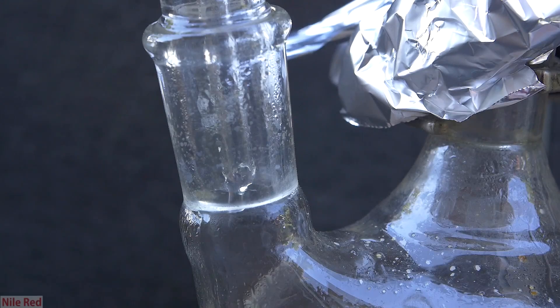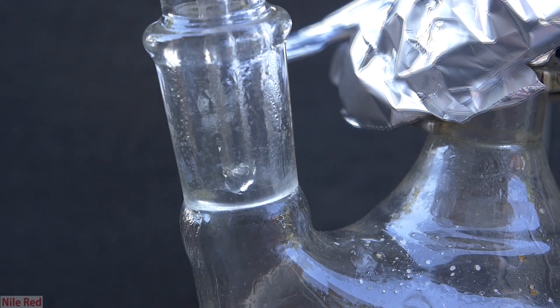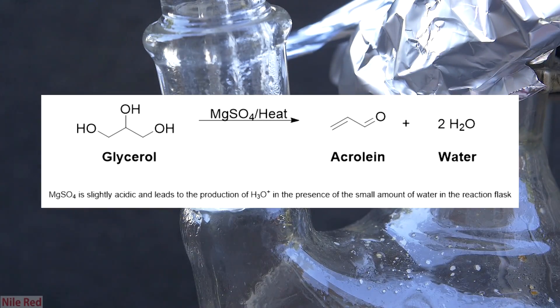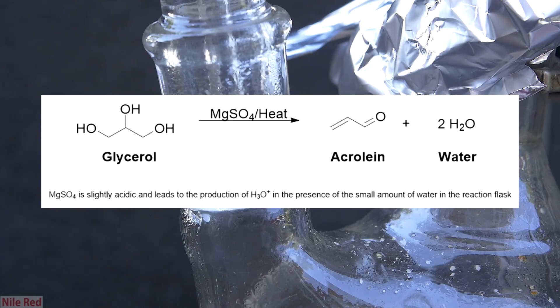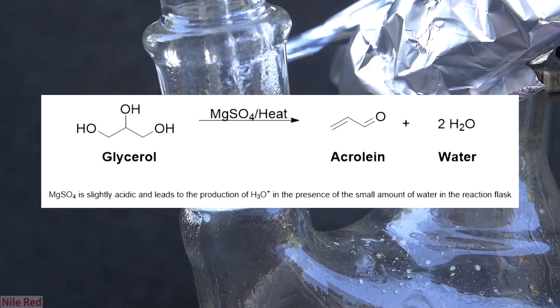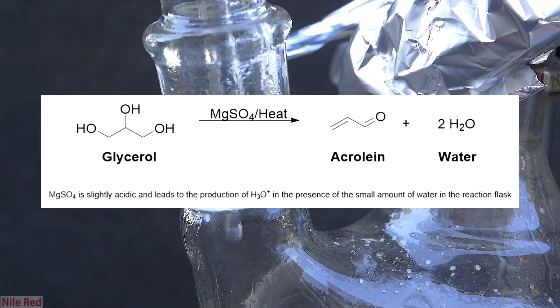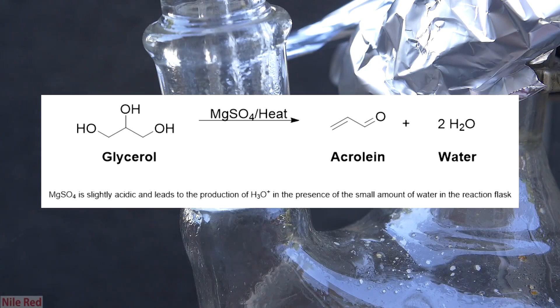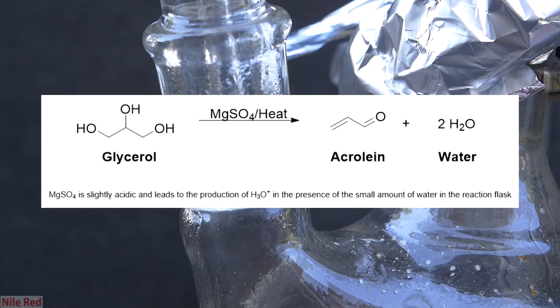As we heat our mixture of magnesium sulfate and glycerol, our glycerol is catalytically broken down into acrolein and water. The reaction is catalyzed by our slightly acidic magnesium sulfate salt, and it proceeds in two distinct dehydration steps.